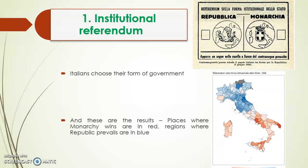The key expressions of today. The first one: institutional referendum — the referendum which took place on the 2nd of June 1946, for the first and last time in Italy. People were called to decide which institutions they wanted, to choose their form of government.